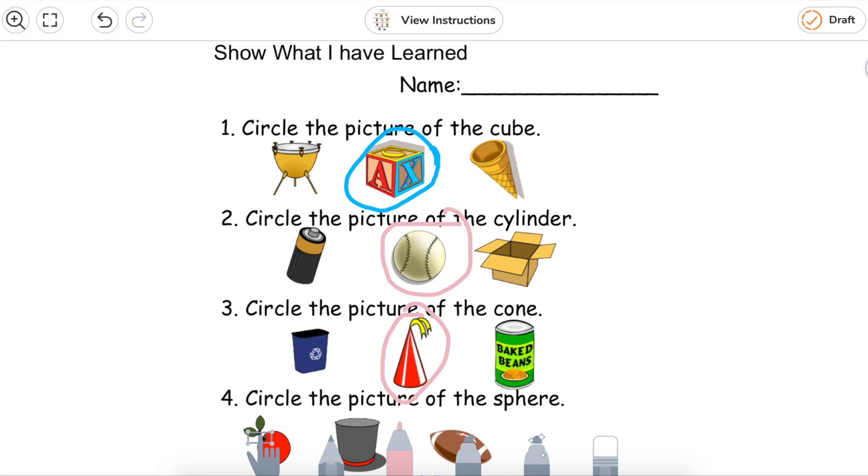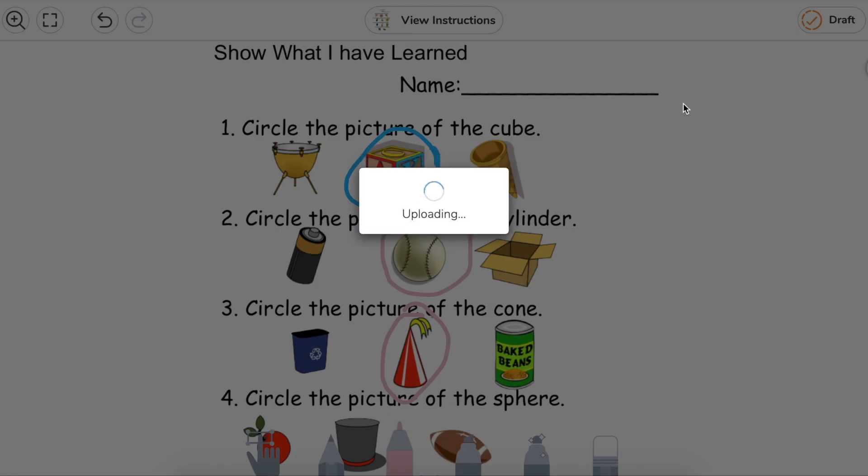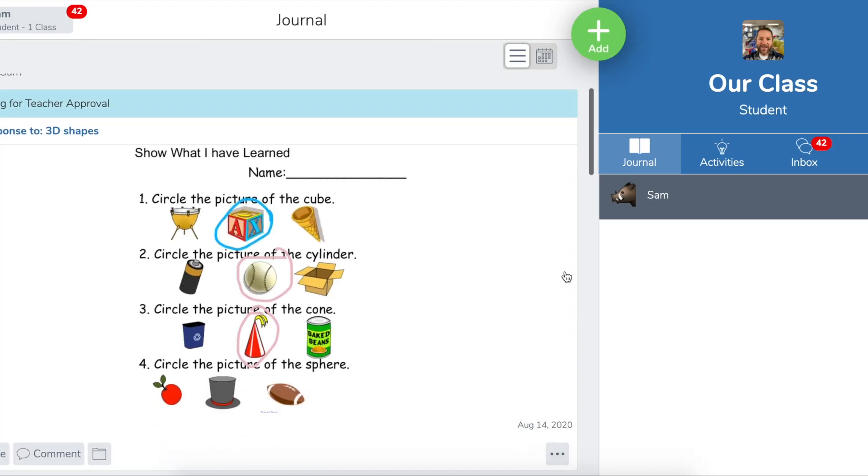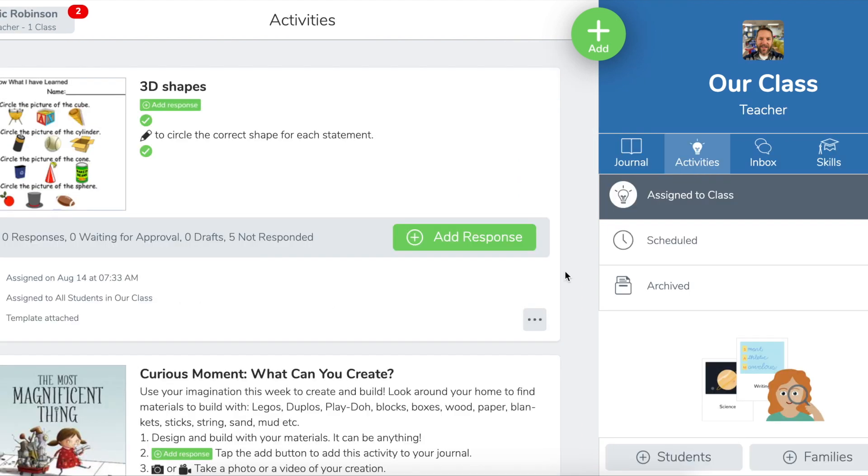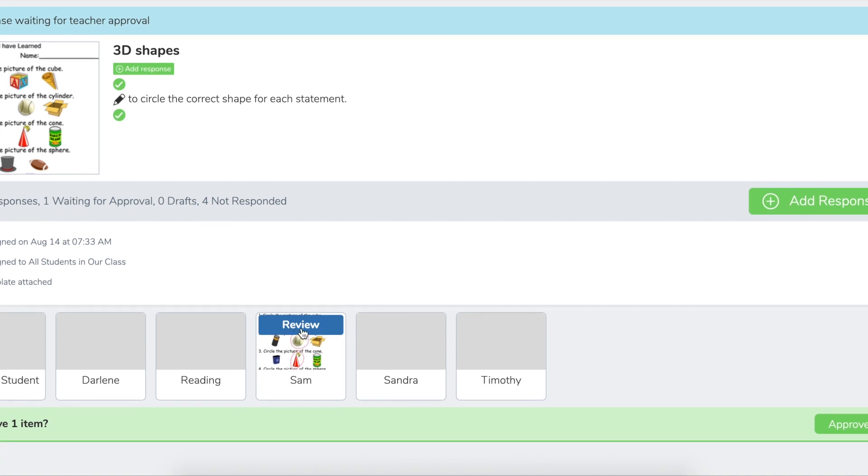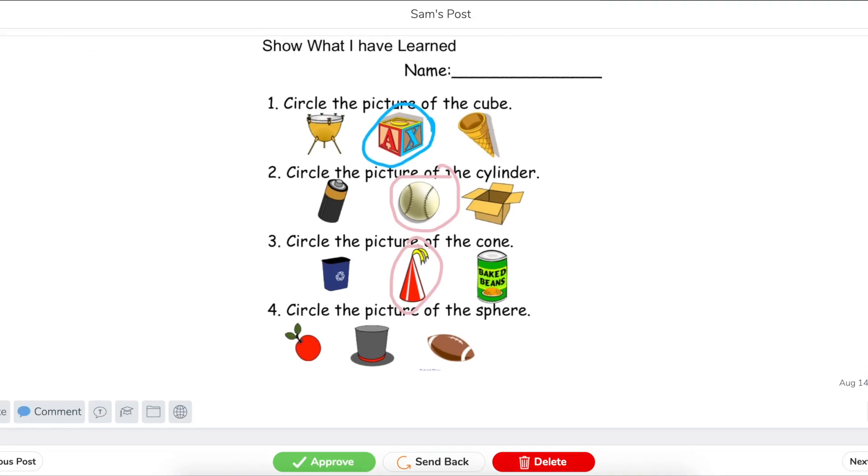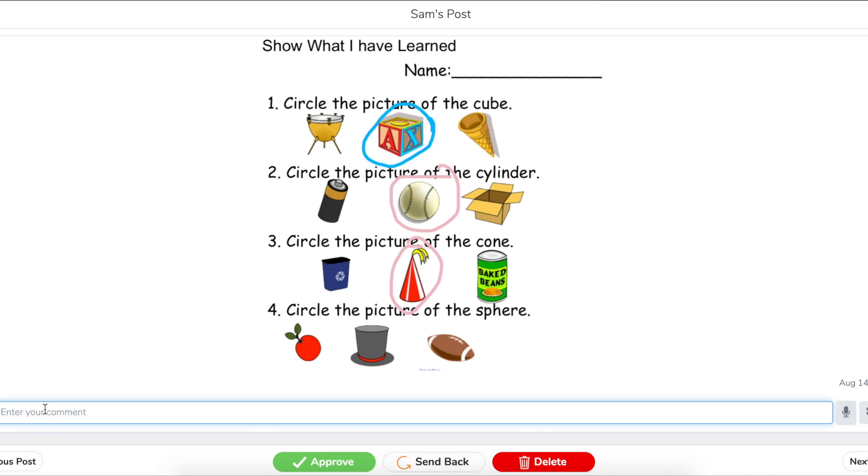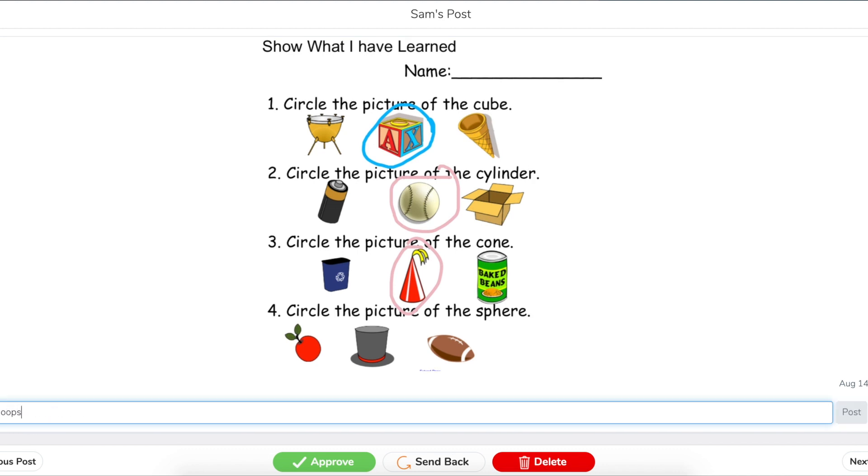Now one way, once the student turns this work in, that I can leave feedback for them is just by leaving a comment. So I'm gonna click on this gray bar here. Aha, there's Sam's work so I'm gonna review it. Okay, now of course I can leave a comment like oops, looks like you missed the cylinder.